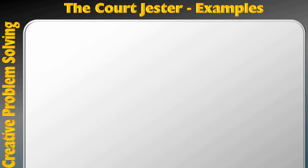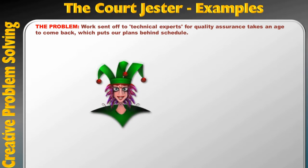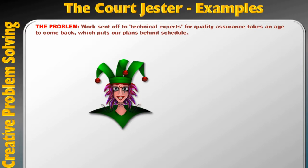So here are some examples of the court jester in action. Here's our problem: work sent off to technical experts for quality assurance takes an age to come back, which puts our plans behind schedule. Here are some provocations from the court jester.